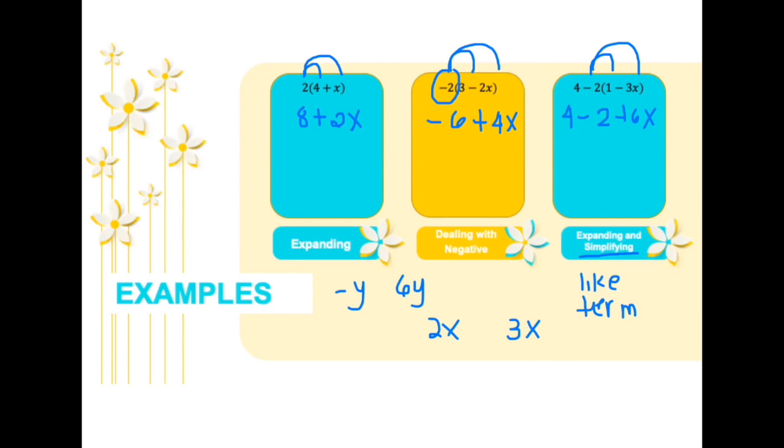Now please do take note that we also apply the rule of operations, which we call BIDMAS or PEMDAS. So instead of adding or subtracting 4 and 2 together, first we have to multiply, do the multiplication first into the brackets before simplifying or combining like terms. So for this case, we have 4 and 2 which are like terms. So 4 minus 2 is 2 plus 6x.